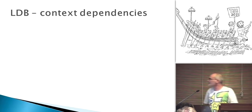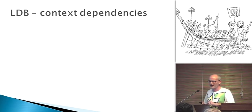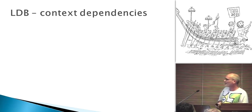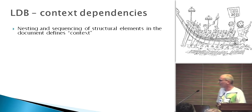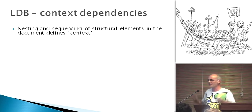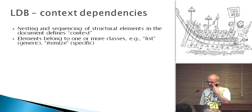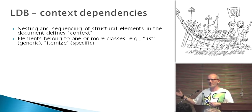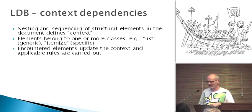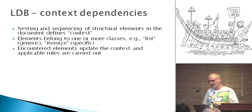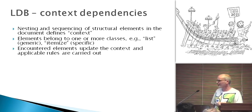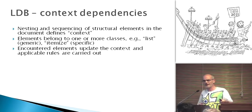Last big block is this LDB. The name is LaTeX database. You're thinking it's a bad name. It might end up being Element Relationship Management, ERM. What is this? This is nesting and sequencing of structural elements in the document. That makes up the context. And elements in the document, they belong to one or more classes. So, for example, they belong to the class list. That's a generic thing. Or they belong to the class itemized. That's a fairly specific one. And when we encounter those elements in the document, then we internally update the context. And any rule that has been defined for the context that is applicable is being carried out.